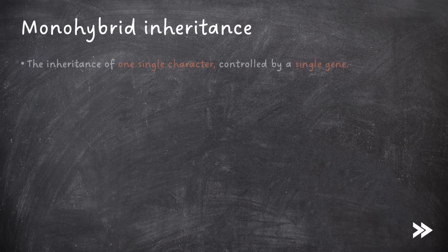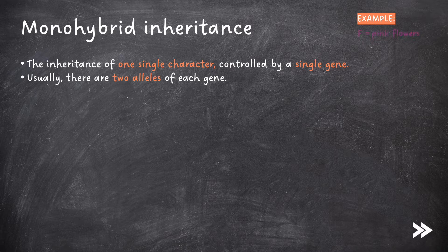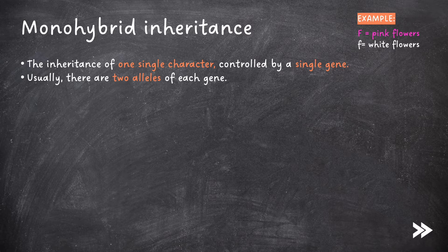Next, we need to know about mono and dihybrid inheritance. Monohybrid inheritance is the inheritance of one single character controlled by a single gene. Usually there are two alleles of each gene. For example, the gene for colour of flowers, F, may have two alleles — the dominant one codes for pink flowers, and the recessive allele codes for white flowers. The specification wants us to be able to use fully labelled genetic diagrams to predict the effects of monohybrid and dihybrid crosses, so what does this actually look like?